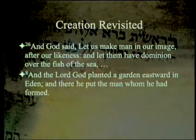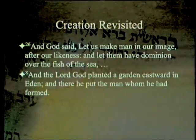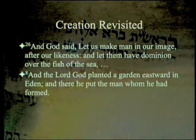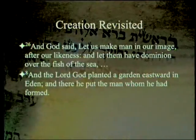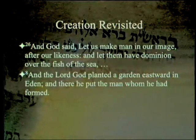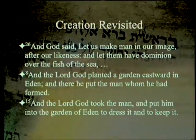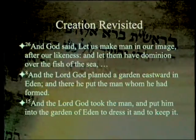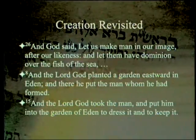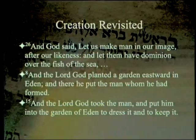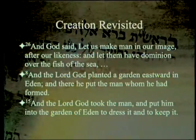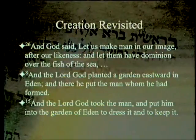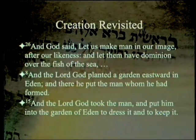The three key verses are: Genesis 1:26 — 'Let us make man in our image, after our likeness, and let them have dominion — radah — over the fish of the sea, and over the birds'; Genesis 2:8 — 'The Lord God planted a garden eastward in Eden, and there he put — sim — the man whom he had formed'; and Genesis 2:15 — 'The Lord God took the man and put — nuach — him into the Garden of Eden to dress it and keep it.'